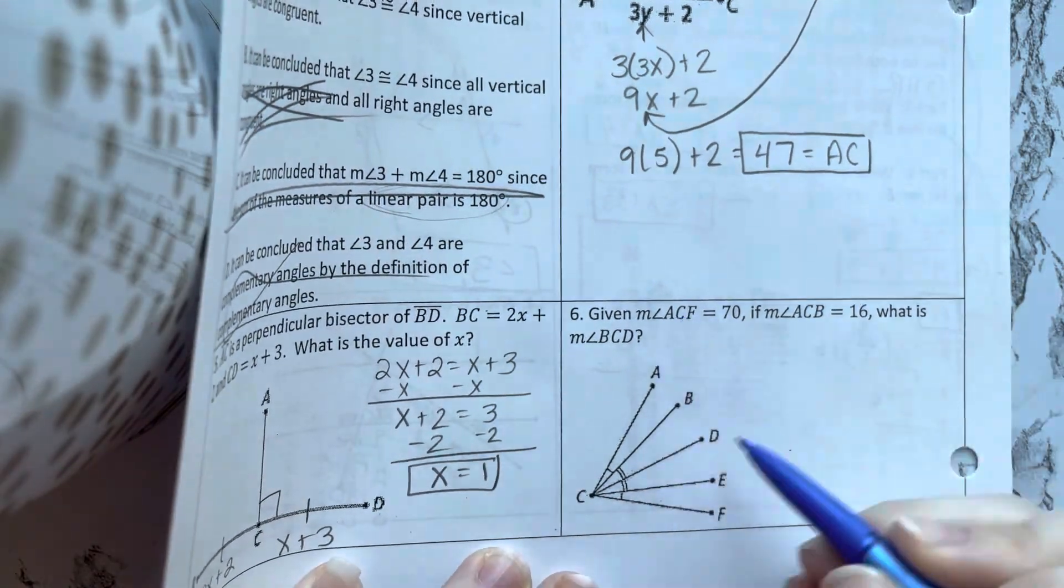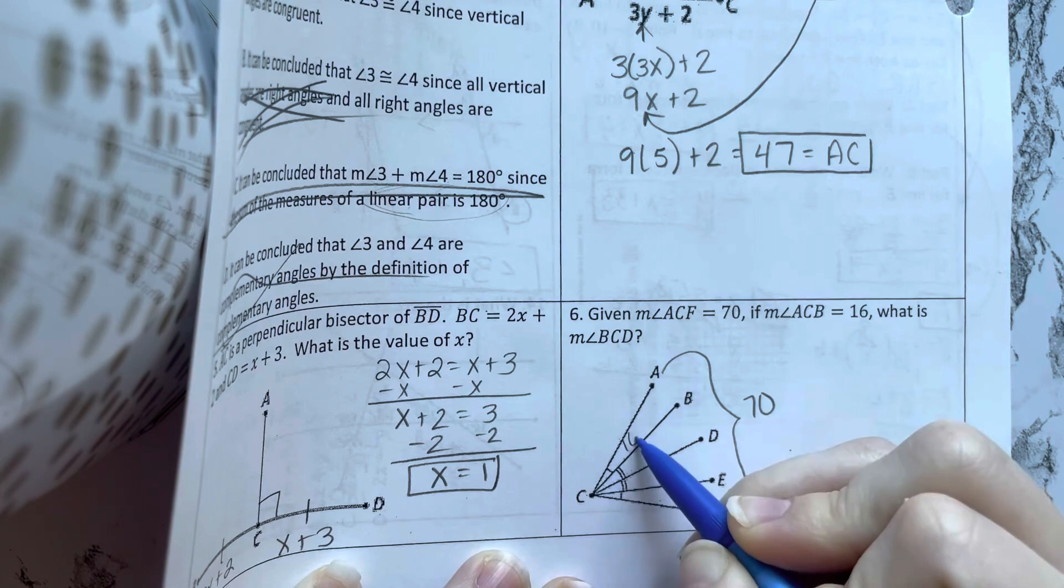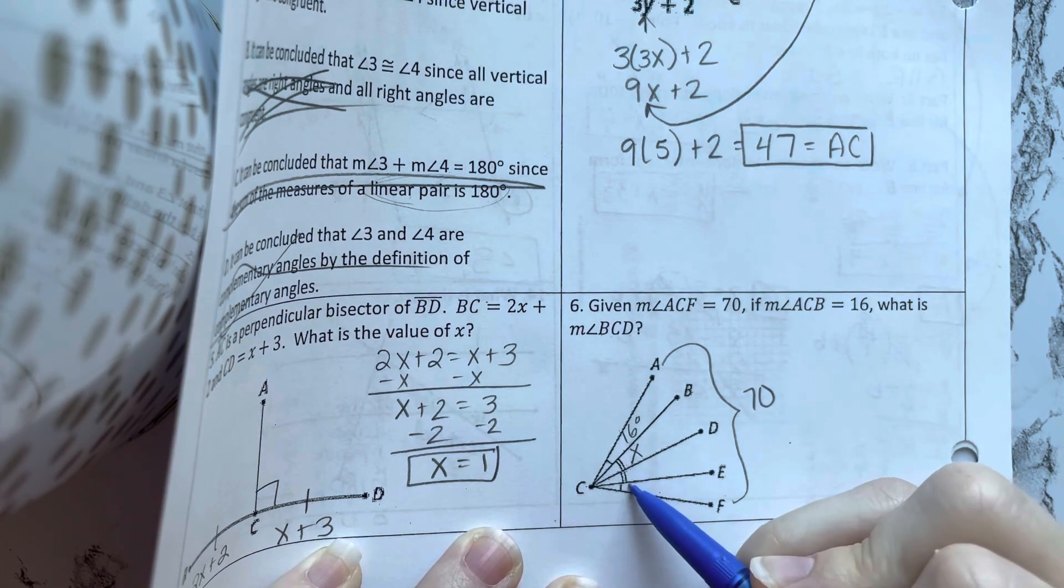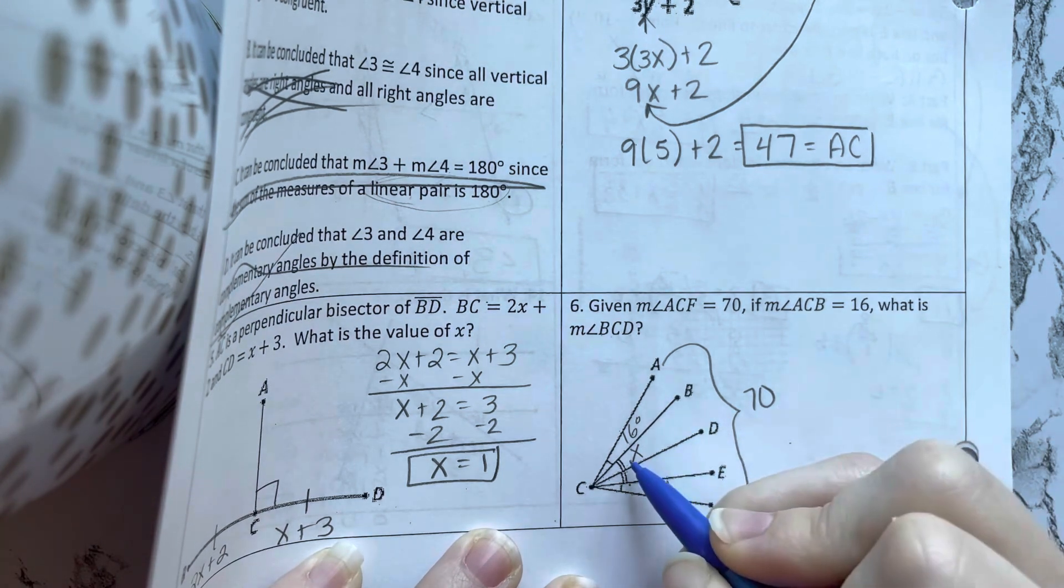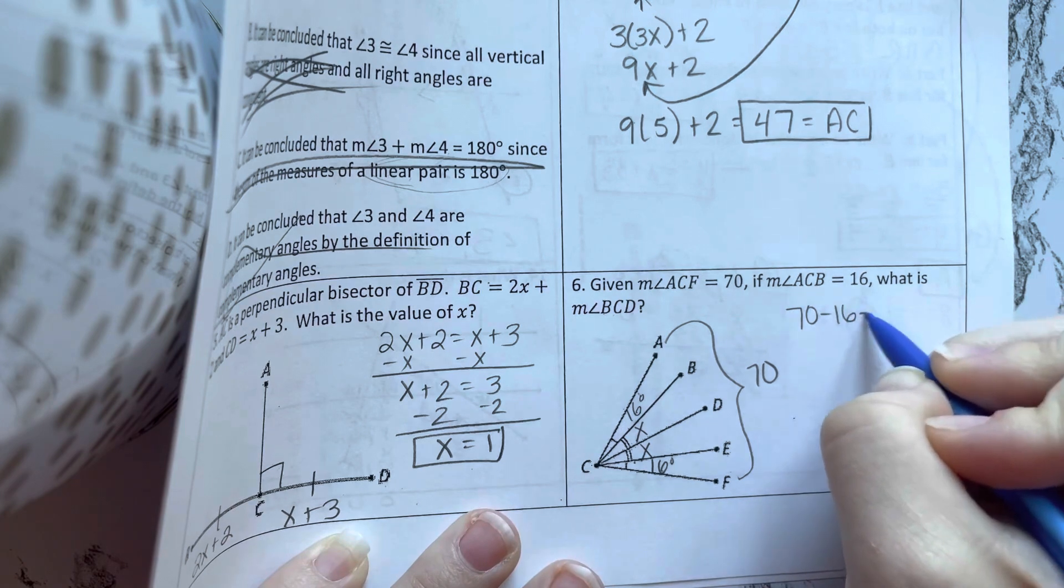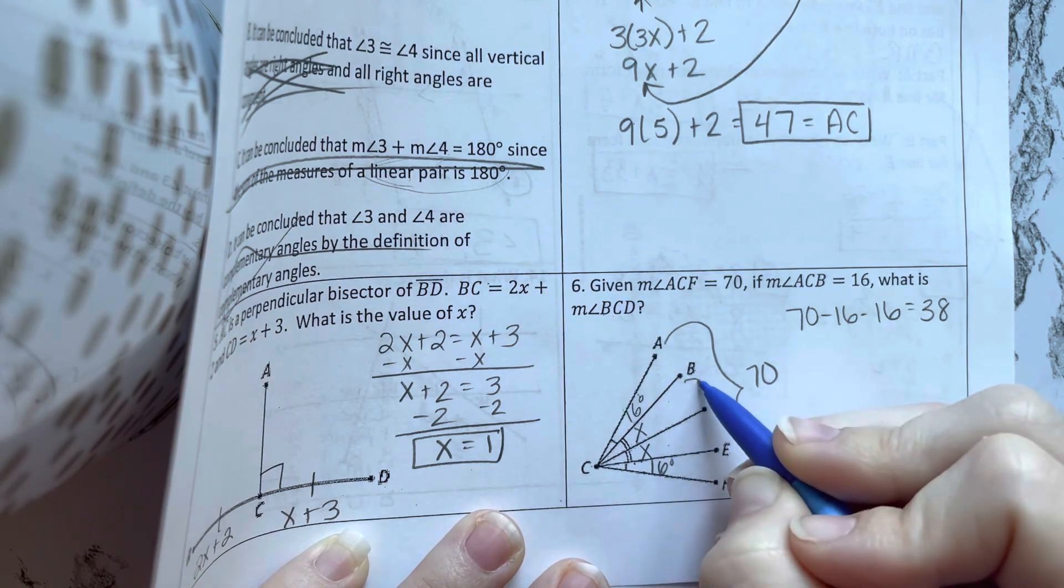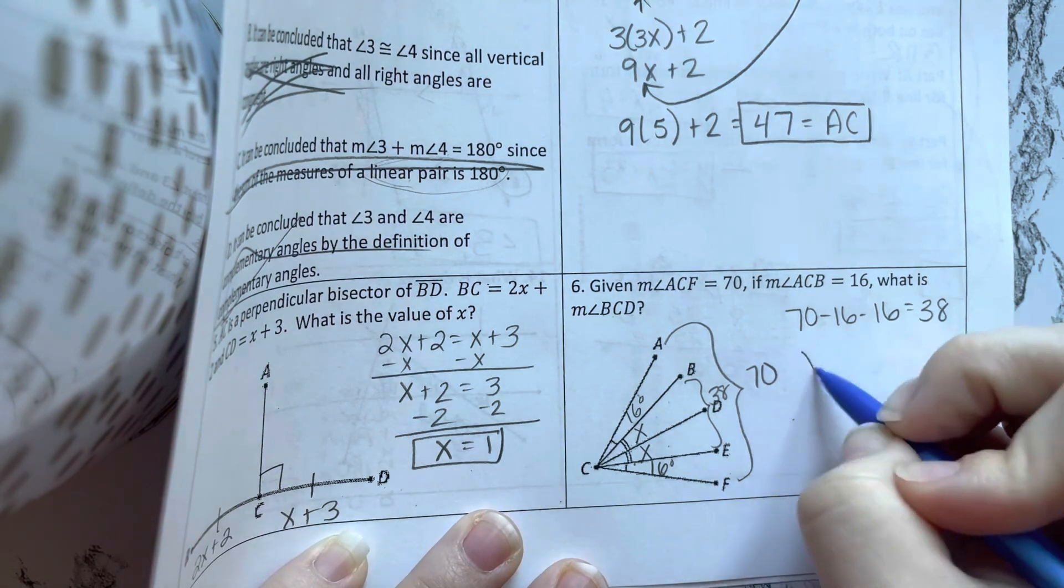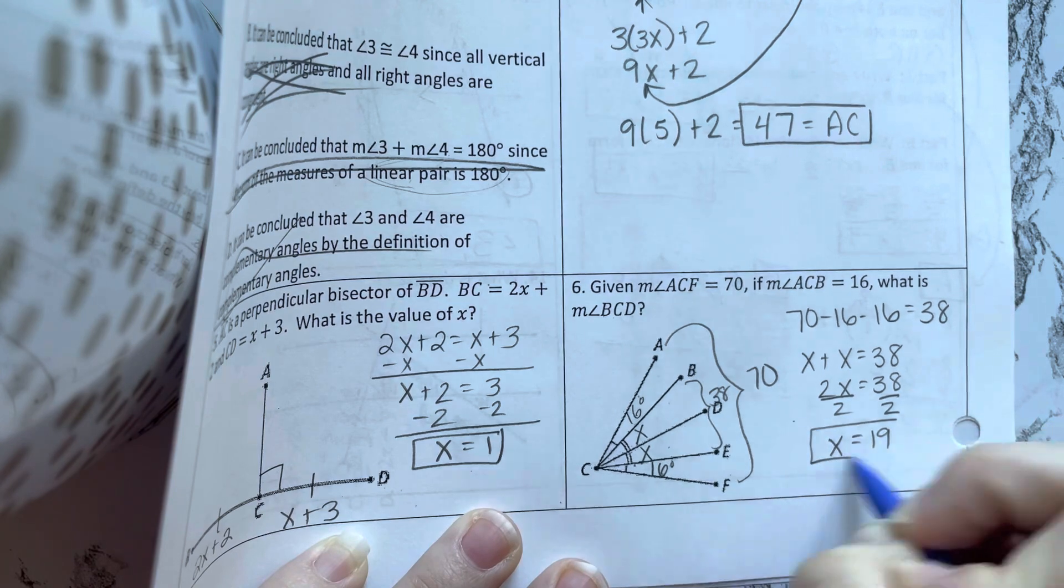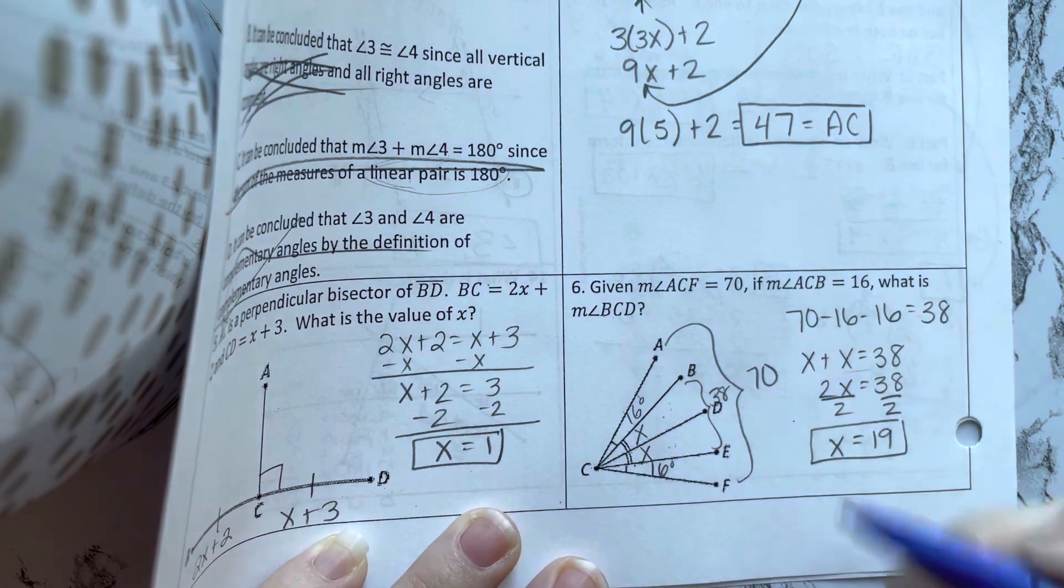Last one. Given the measure of ACF, that's that whole thing is 70. If the measure of angle ACB, that's this one, is 16. What is the measure of BCD? So I know all of this is 70. I see that this angle with one arc mark is congruent to this one, which means this is also 16. And then I see these two arc marks and these two arc marks, which mean those are both X. The whole thing is 70. I know these two are 16. So if I subtract both of those 16s, I'm going to get 38. And 38 is equal to this now. So I know that X plus X has to equal 38. Well, that's 2X. So X equals 19. I can also think about if these are both the same measure, just take 38, divide that by 2. That's what I'm doing here, just writing it down mathematically.